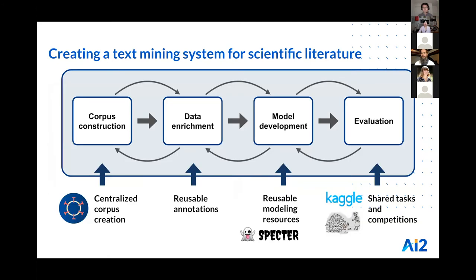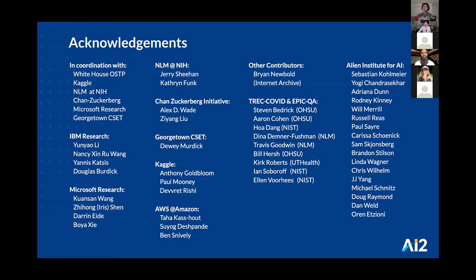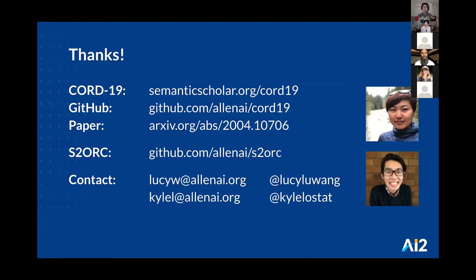In conclusion, AI and NLP techniques have the potential to be very helpful for reducing information overload and helping experts find answers to COVID-19 questions. The development of these systems is expensive, and we've highlighted various ways open data and resources have contributed to speeding up this process and relieving the burden for AI practitioners at various stages in the development pipeline. We wanted to thank our many collaborators on CORD-19 and the various shared tasks. We've included links to download CORD-19, STORC, and various other resources. That concludes our talk.